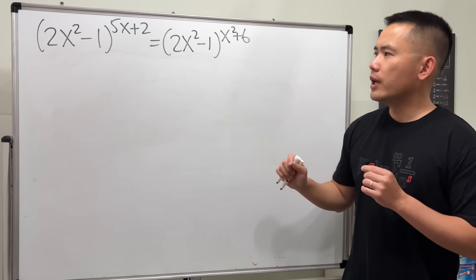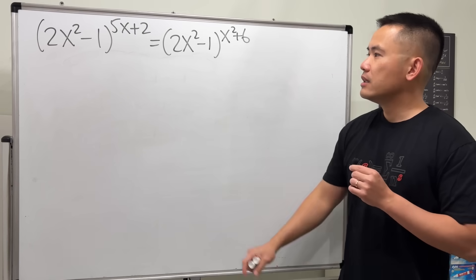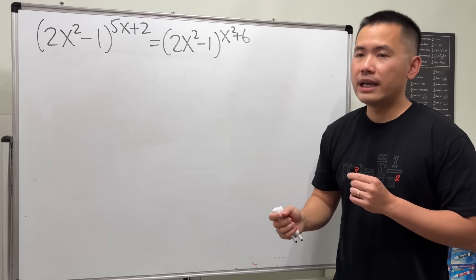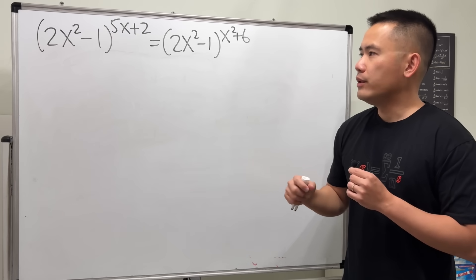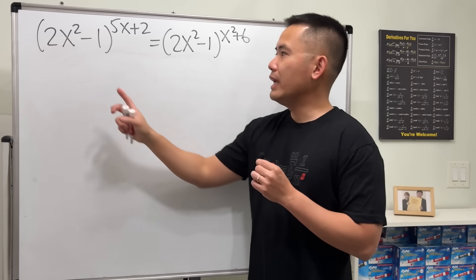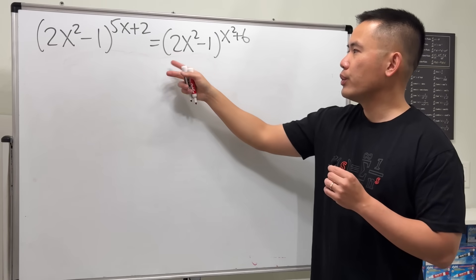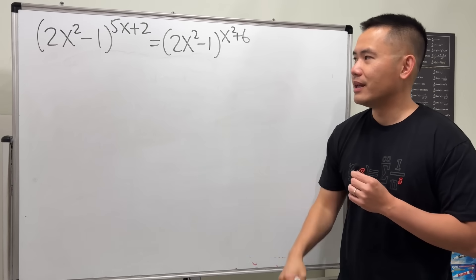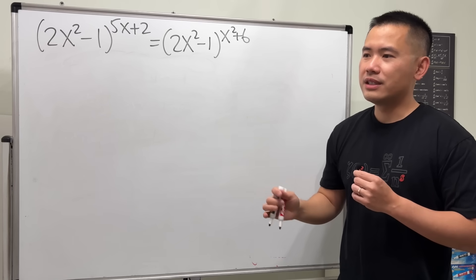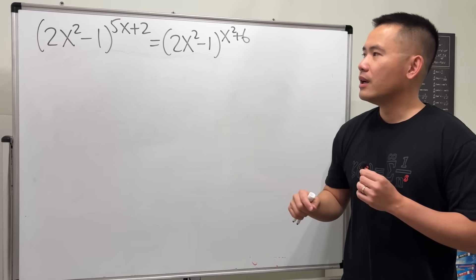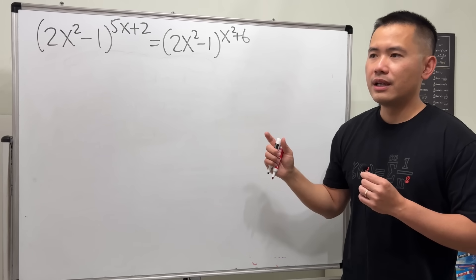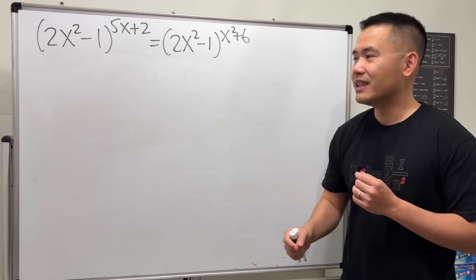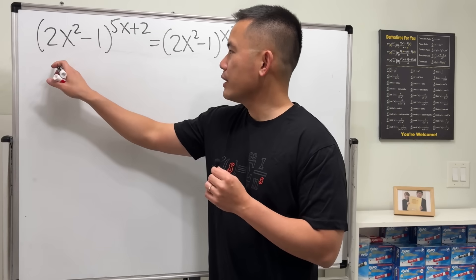For this kind of equation you can break it down into cases — such as when the bases are the same the exponents have to be equal, and you also have to consider what if we have 1 to a power, because 1 to anything is equal to 1. In this video though I'd like to show you a straightforward way using logarithms.